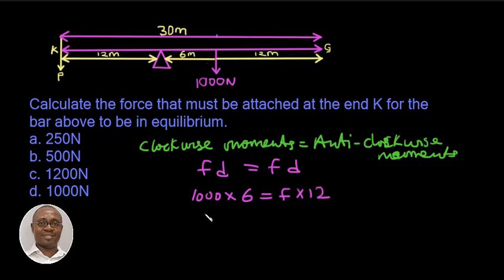So if we go ahead by finding the value for F, we have to divide both sides of the equation by 12. So by the time we cancel out, we will have the force equal to 500 newtons.